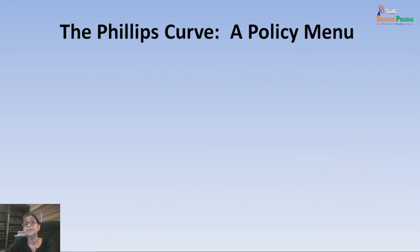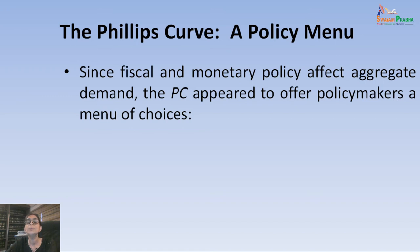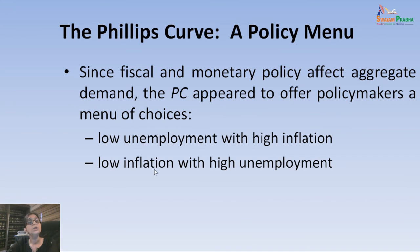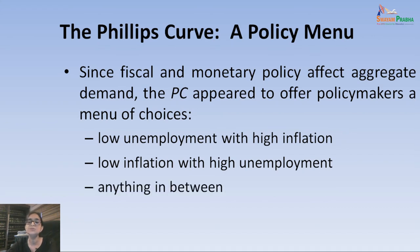The short-run Phillips Curve basically gives a policy menu to policy makers. If they are using fiscal and monetary policy to affect aggregate demand, the Phillips Curve offers a few choices: the policy maker can either adopt low unemployment with a high inflation rate, or low inflation with a high unemployment rate — that is, it gives them a trade-off, or anything in between.